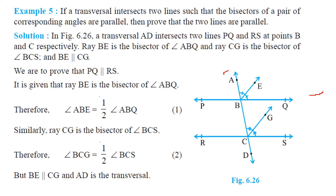In this figure, the transversal AD intersects two lines PQ and RS at points B and C. Ray BE is the bisector of angle ABQ, and ray CG is the bisector of angle BCS. It is given that BE is parallel to CG, and we have to prove that PQ is parallel to RS.